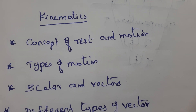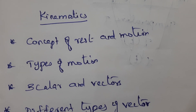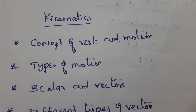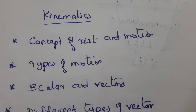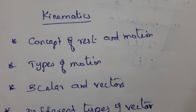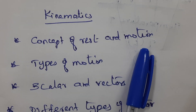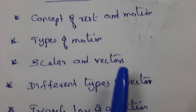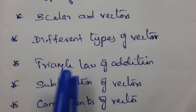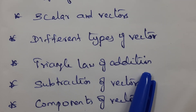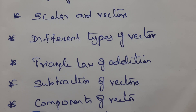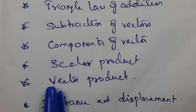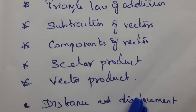Good morning, dear students. Welcome to physics class. We are in the second unit, that is kinematics. In this unit we have learned a few concepts: concept of rest and motion, types of motion, scalar and vectors, different types of vector, triangle law of addition, subtraction of vectors, components of vector, scalar product, and in the last class we discussed vector product, distance and displacement.